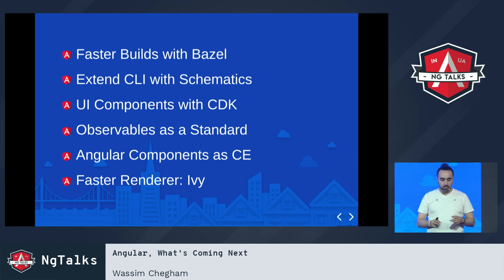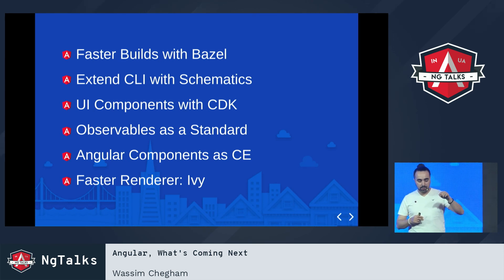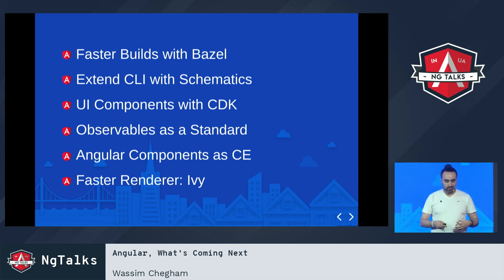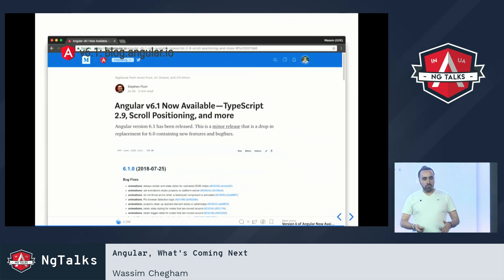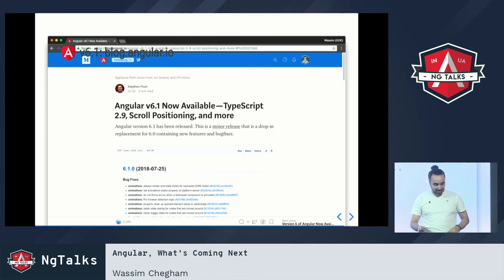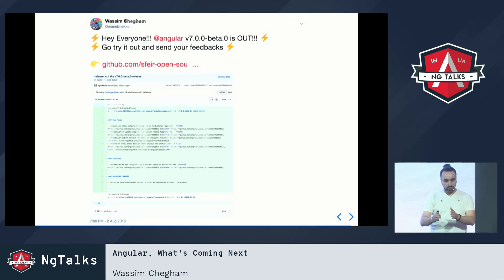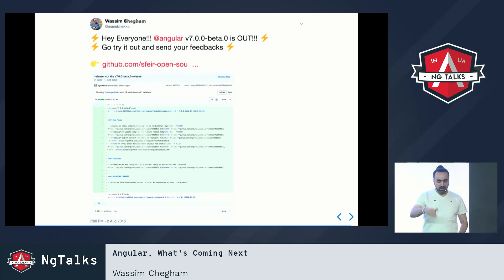Ivy will make Angular more inclusive — allowing us to use Angular with other technologies. v6 is already out. Angular v7 Beta 1 is out — they should probably rename it to Alpha since there are only a couple of commits. It's not ready for production yet, but you could get into the source code and see what's coming next in v7.